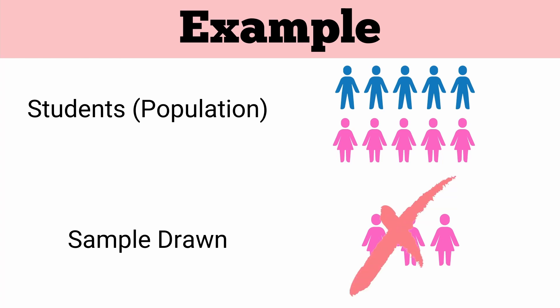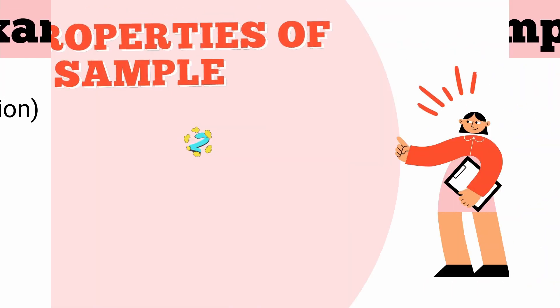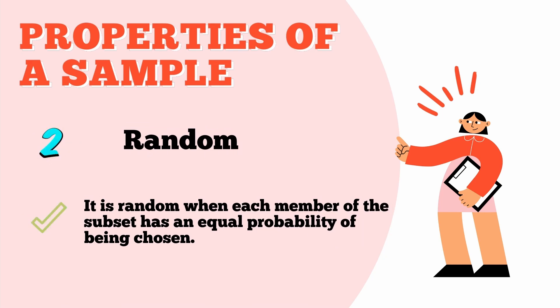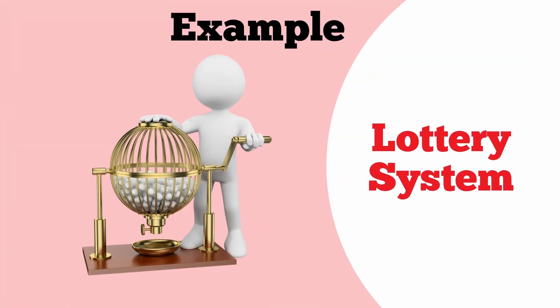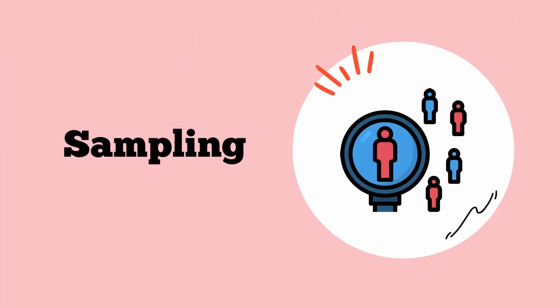The second property of a sample is that it should be random. A sample is called random when each member of the subset has an equal probability of being chosen — meaning it is an unbiased representation of the larger population. An example is a lottery method, where each member of the population is assigned a number and numbers are selected at random, giving each person an equal chance of winning.